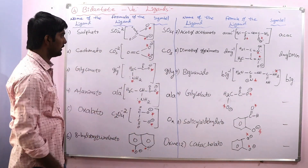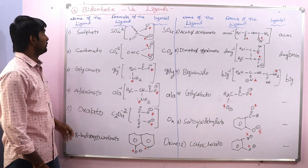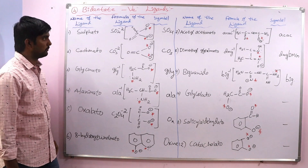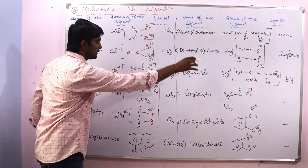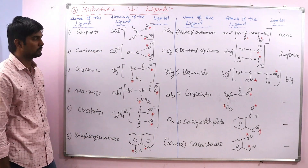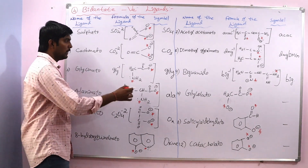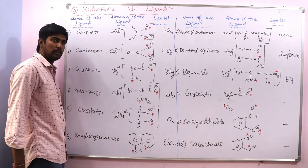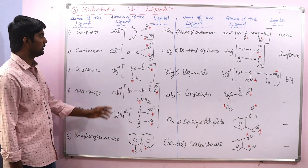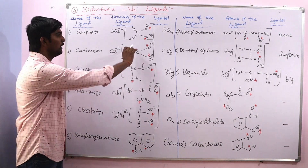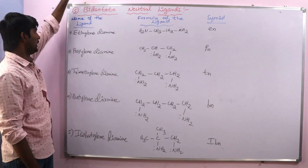For the earlier ligands with symbols, remember both the structure and the symbol. While remembering these structures, you must concentrate on the donor atom, because the donor atom is very important — the ligand is bonded to the central metal atom or ion through the donor atom only. Next we discuss bidentate neutral ligands.